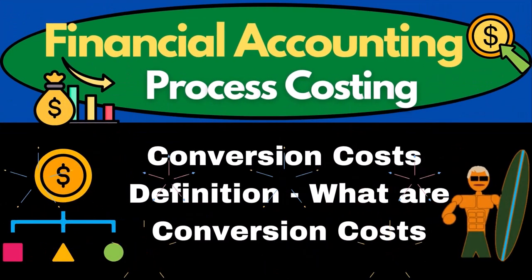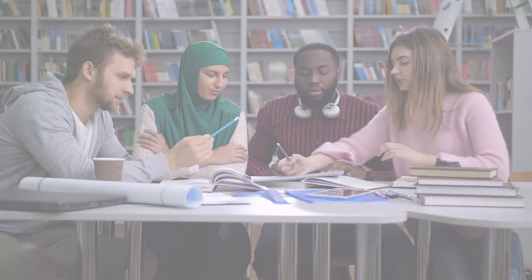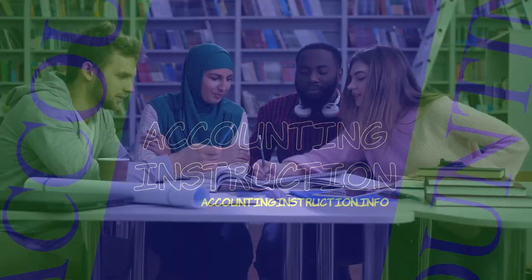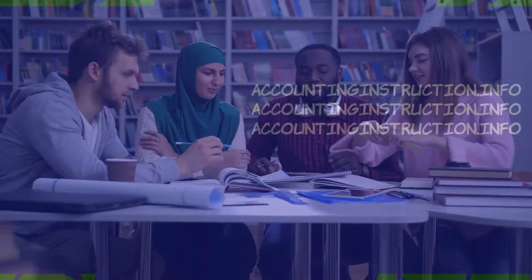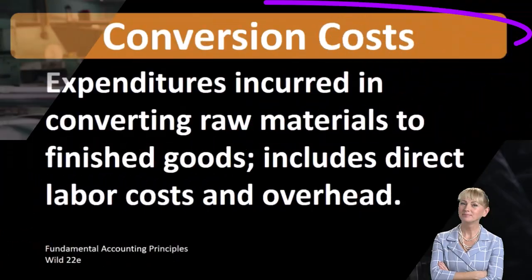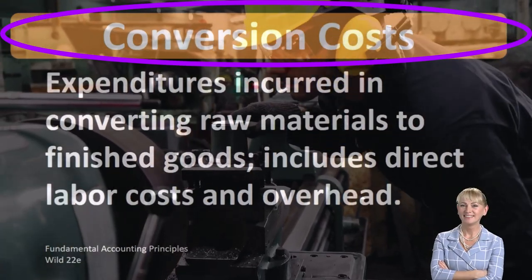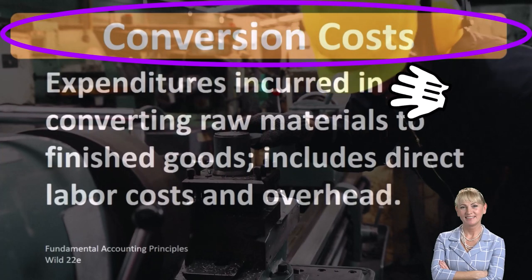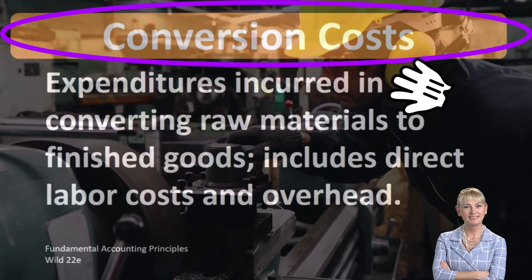Hello, in this lecture we will define conversion costs. According to Fundamental Accounting Principles Wild 22nd Edition, the definition of conversion costs is expenditures incurred in converting raw materials to finished goods, including direct labor costs and overhead.